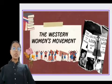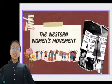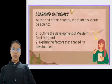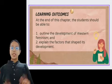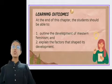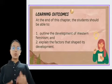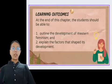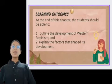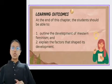Good day everyone. Today we will discuss Chapter 11: The Western Women's Movement. Learning Outcomes: At the end of this chapter, the student should be able to first outline the development of Western feminism, and second, explain the factors that shaped its development.